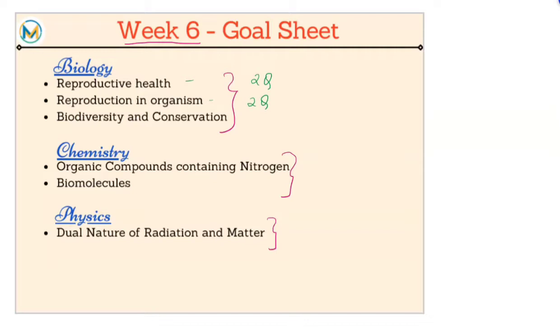Reproductive health, reproduction in organisms, biodiversity and conservation—two questions in each can be expected. In chemistry, nitrogen-containing compounds or amines and biomolecules—from these also we can expect two questions each.